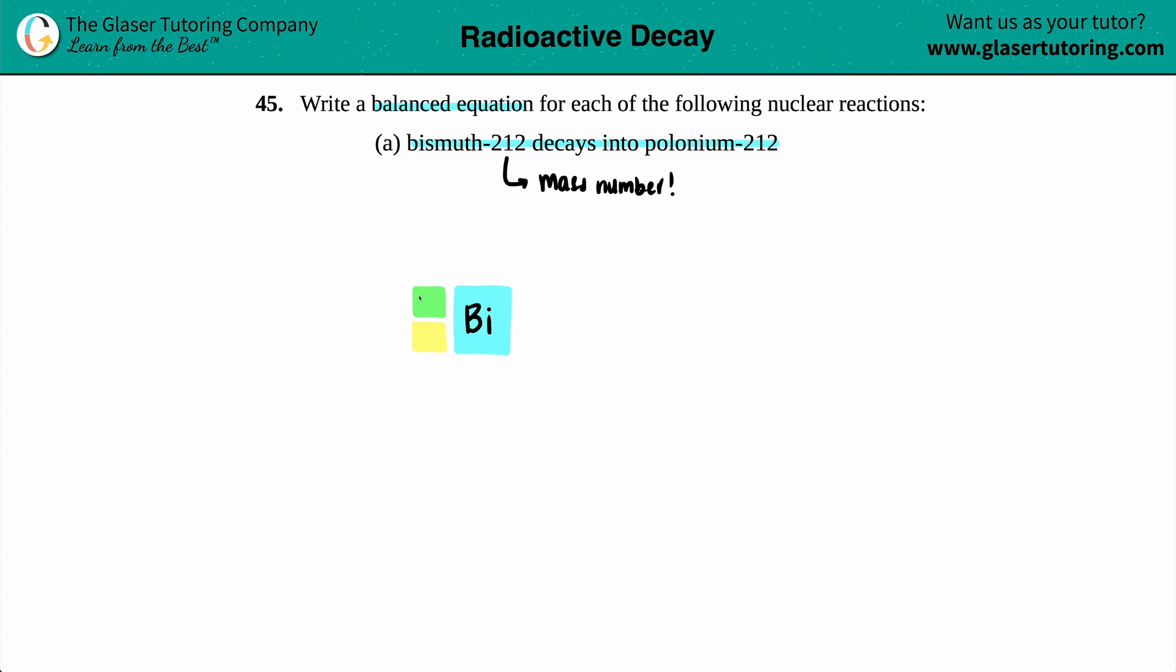Since they said bismuth-212, I'm going to put a 212 up top here. So we'll say mass number, or you could say atomic mass. The bottom number is always your atomic number, and that is specific for each element. Each element is going to have its own unique atomic number.